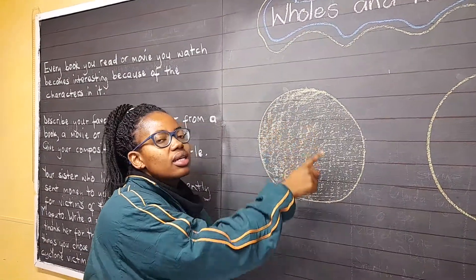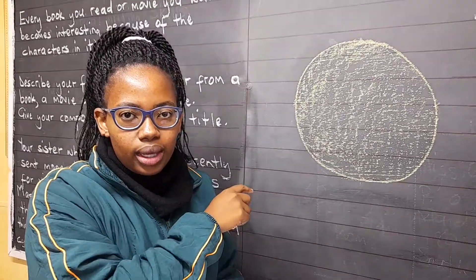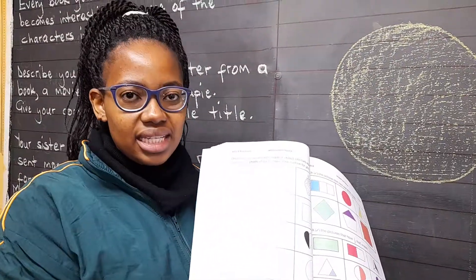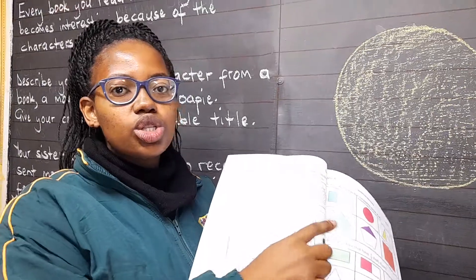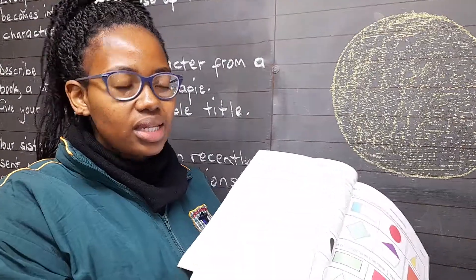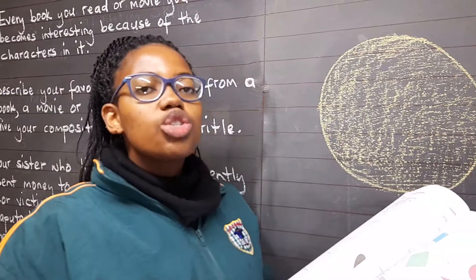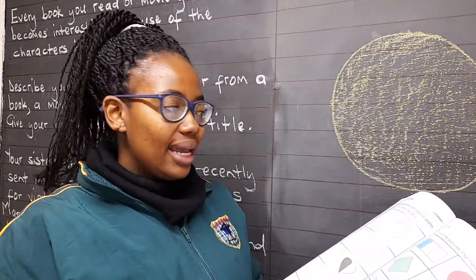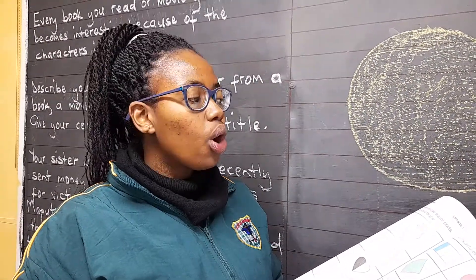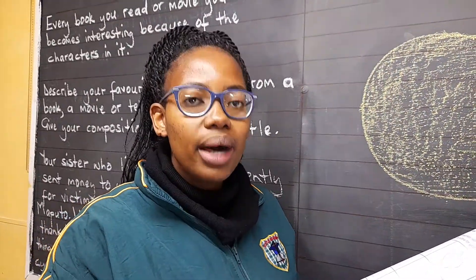This is a circle. It is a whole. You will turn to page 98, where it talks about wholes and halves. Now it says we must draw a line to divide the shape or object into two equal parts.